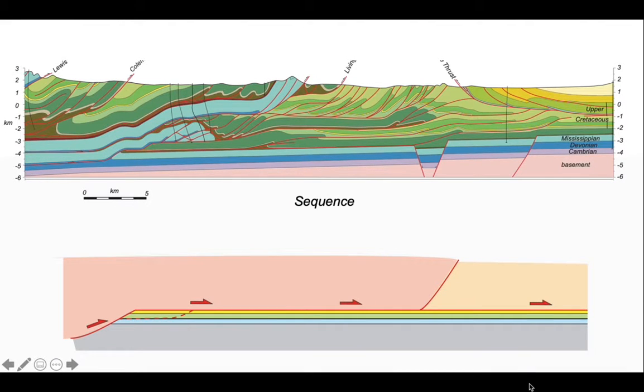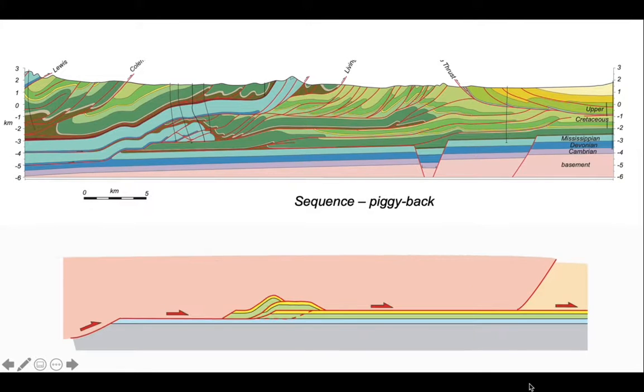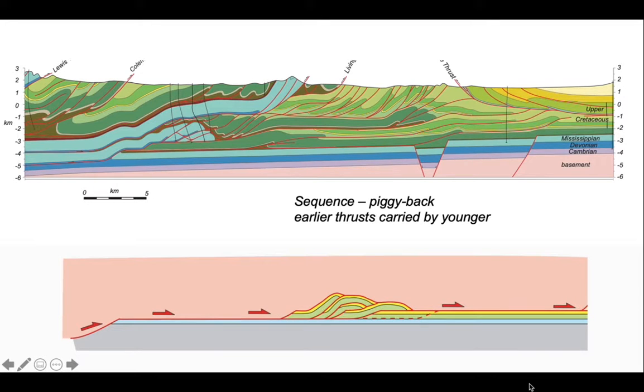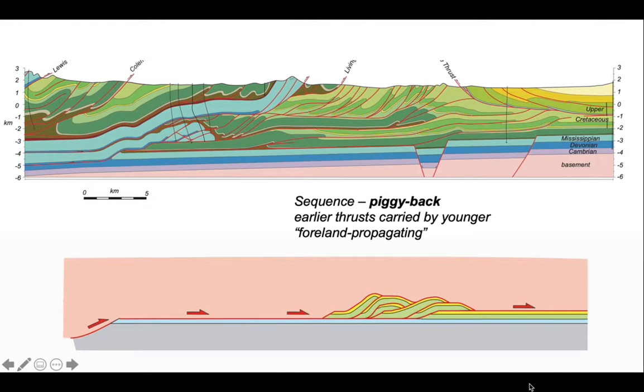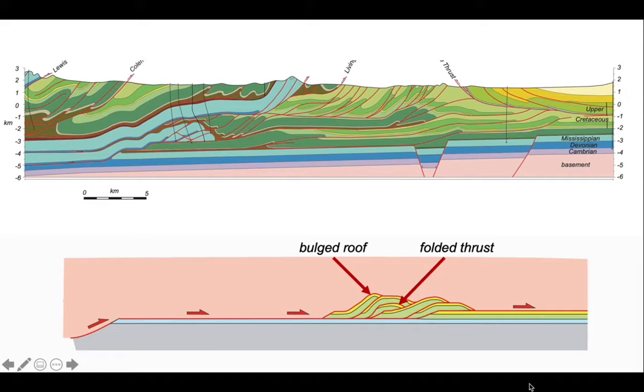So let's think about the sequence by which these systems have developed. The sequence is from left to right, and each formed thrust slice is then carried by the next one that develops underneath piggyback fashion. So earlier thrusts are carried by younger ones. The system as a whole forms a piggyback sequence that propagates towards the foreland, and the evidence of this in the final structure is that thrusts are folded and the roof thrust is bulged as a consequence of these lower thrusts coming in from underneath.